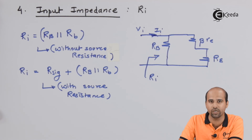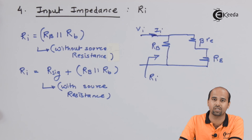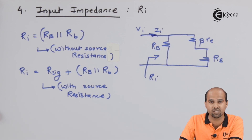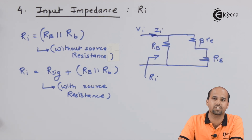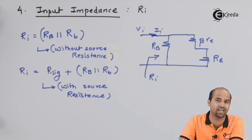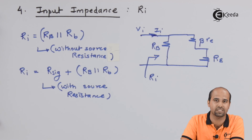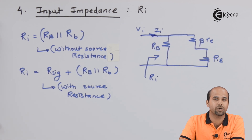For the CC amplifier (emitter follower), the conclusions are: input impedance is high, output impedance is very low, voltage gain is very close to 1 (nearly unity), and current gain is still high. These are the key characteristics of the CC amplifier confirmed by the AC analysis. In the next video we will tackle complex numericals on AC analysis with BJT. Thank you for watching — subscribe, like, comment, and share.